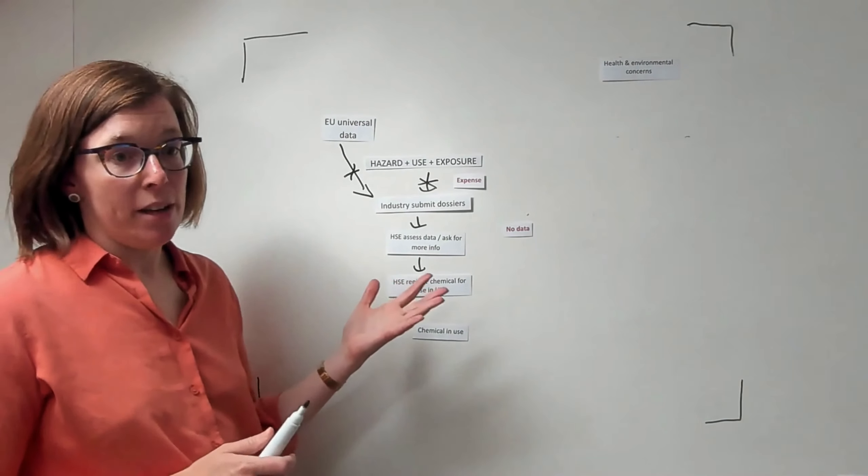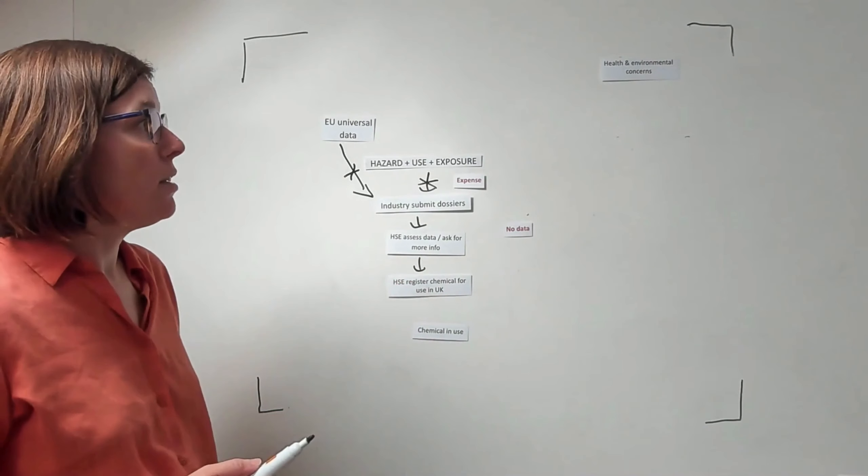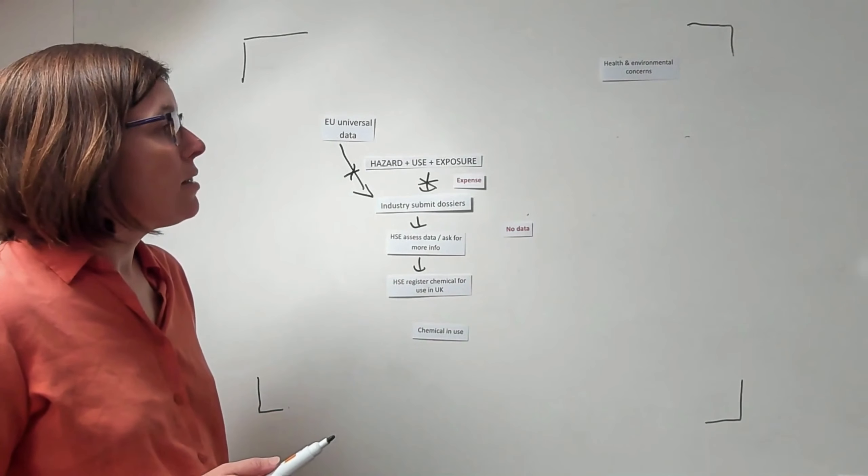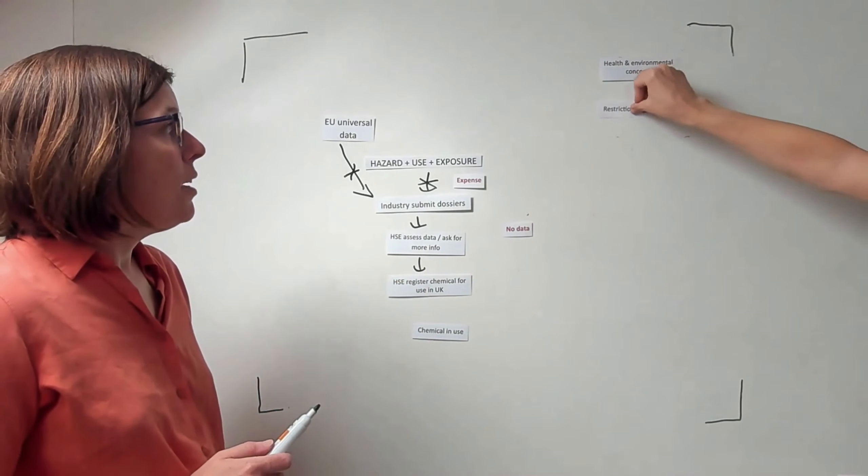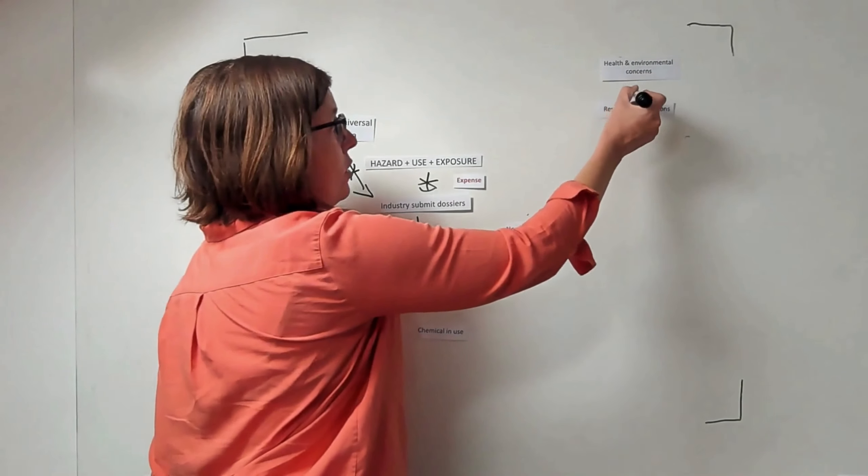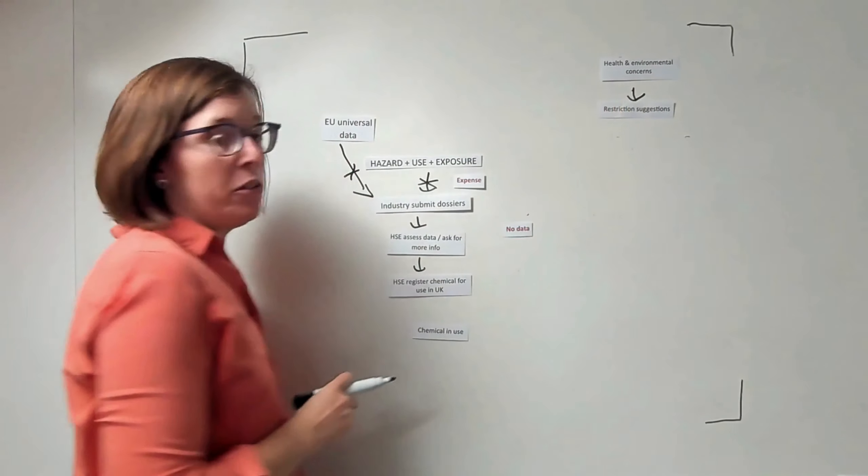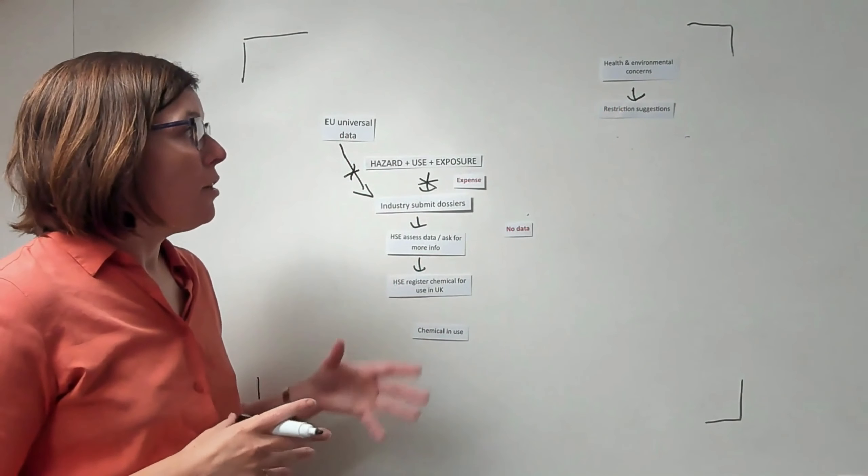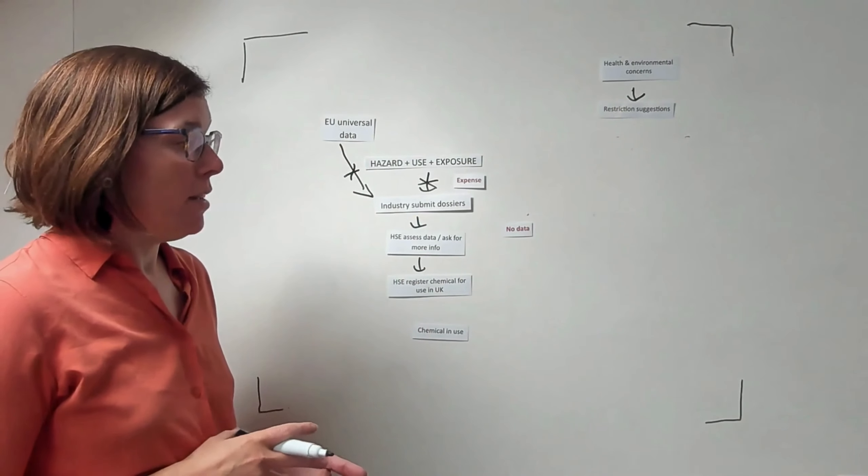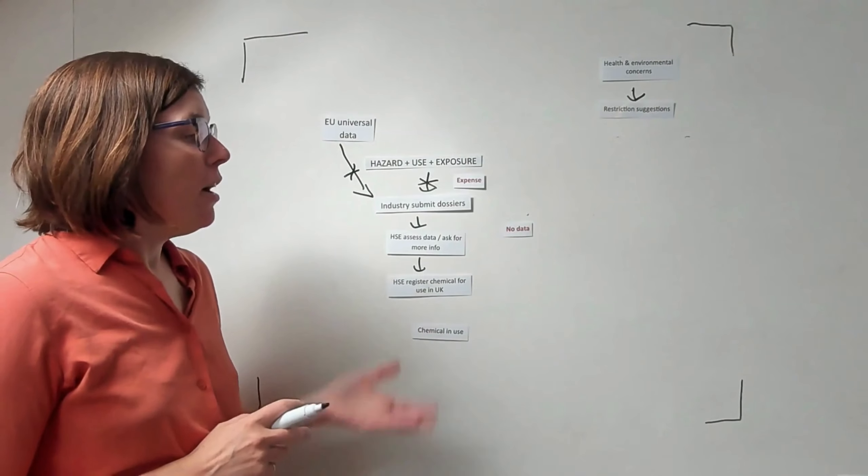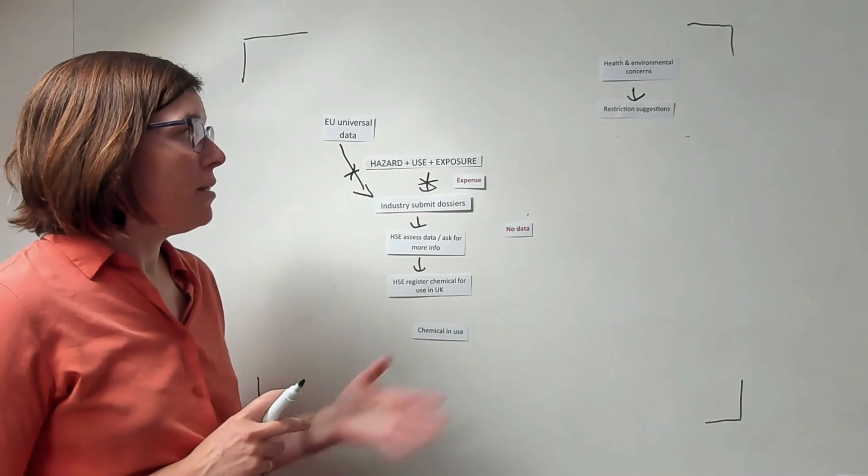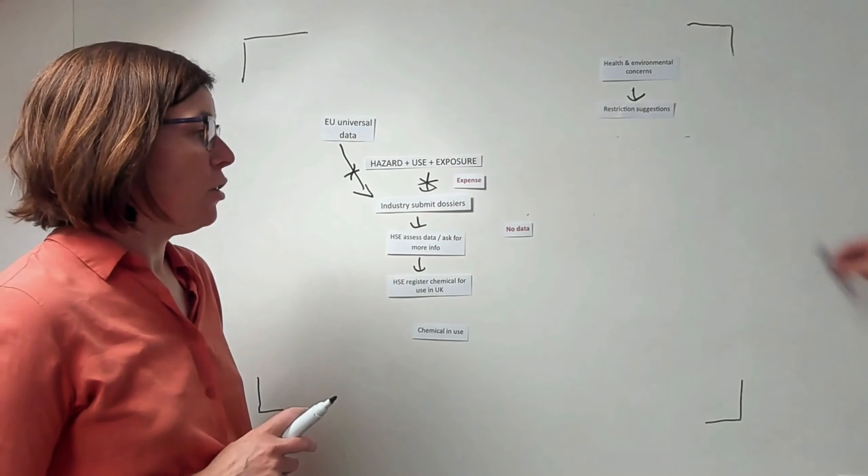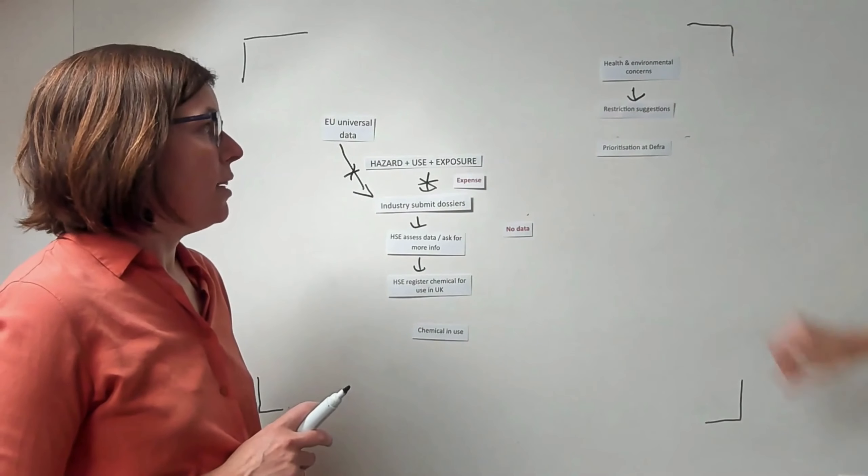The restriction process works on having a range of health and environmental concerns, and these concerns should feed through into a number of restriction suggestions that come through to DEFRA. DEFRA, the department in government that are responsible for the policy around this, are then going through a process of looking at restriction suggestions that come in and prioritizing them.